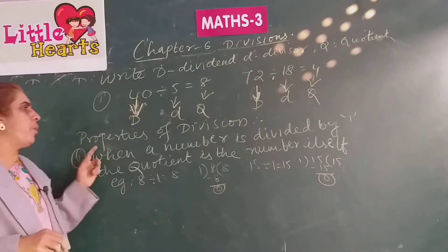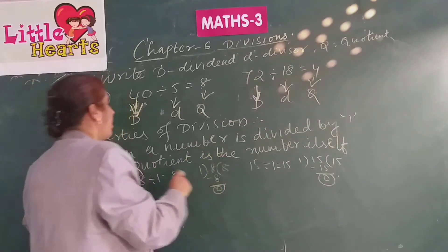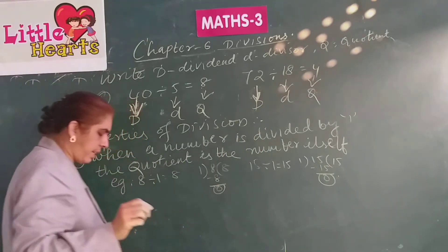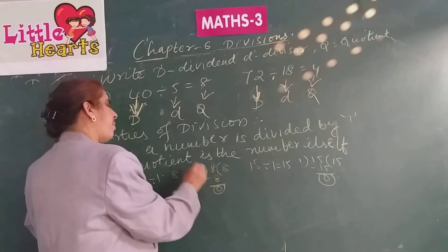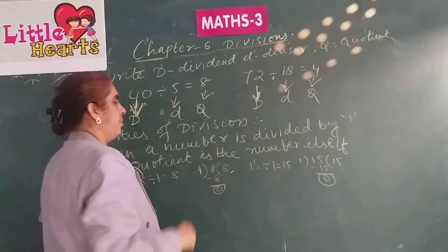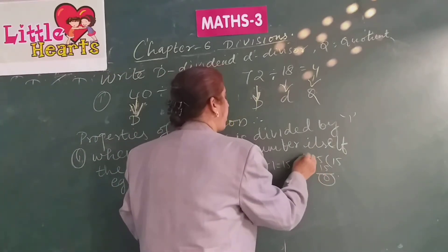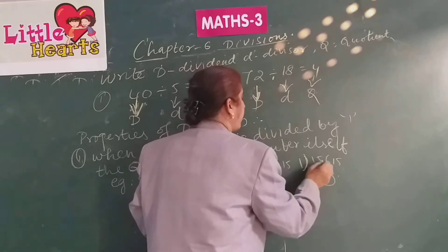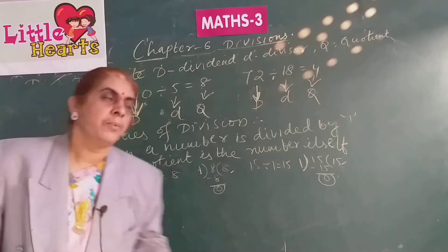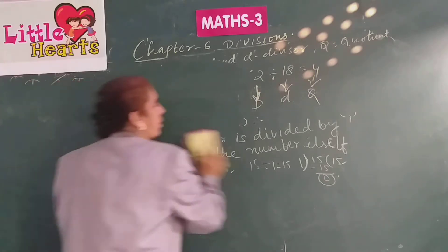Let us go with the properties of division now. Property one: when a number is divided by 1, the coefficient is the number itself. 8 divided by 1 equals 8 — 1 eight is 8, so the coefficient is 8. Similarly, 15 divided by 1 equals 15 — 1 fifteen is 15, so 15 becomes the coefficient. When a number is divided by 1, the number itself will be the coefficient.